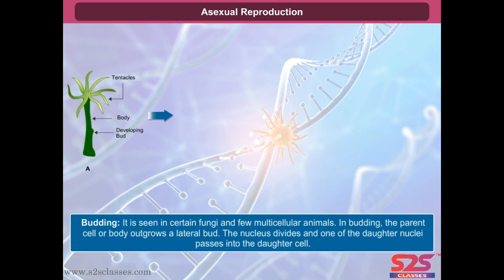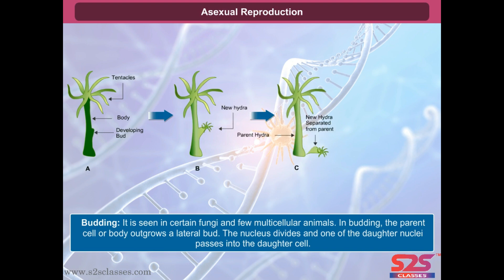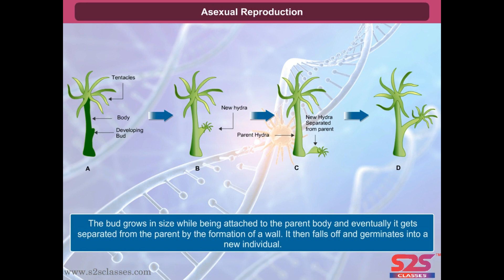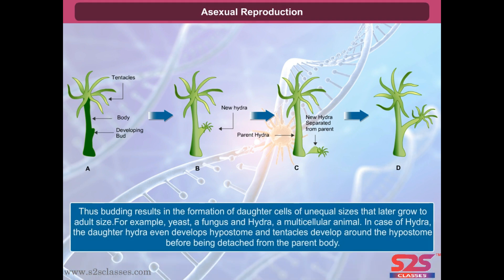Budding is seen in certain fungi and few multicellular animals. In budding, the parent cell or body outgrows a lateral bud. The nucleus divides and one of the daughter nuclei passes into the daughter cell. The bud grows in size while being attached to the parent body, and eventually it gets separated from the parent by the formation of a wall. It then falls off and germinates into a new individual. Budding results in the formation of daughter cells of unequal sizes that later grow to adult size. For example, yeast, a fungus, and hydra, a multicellular animal.